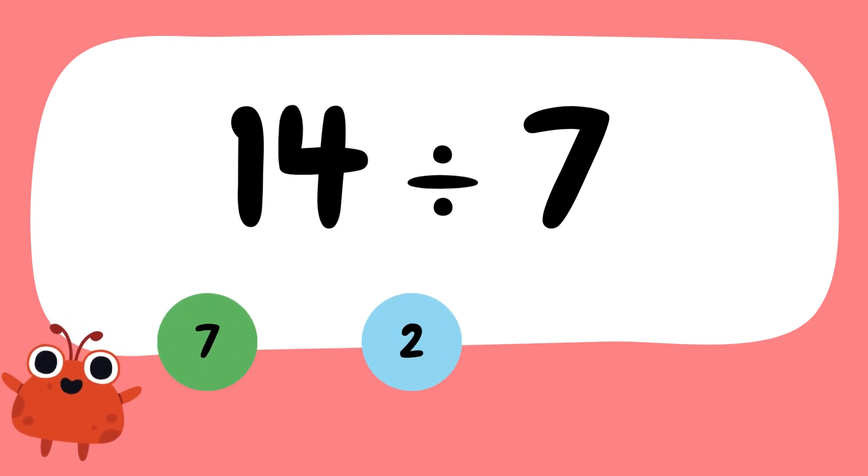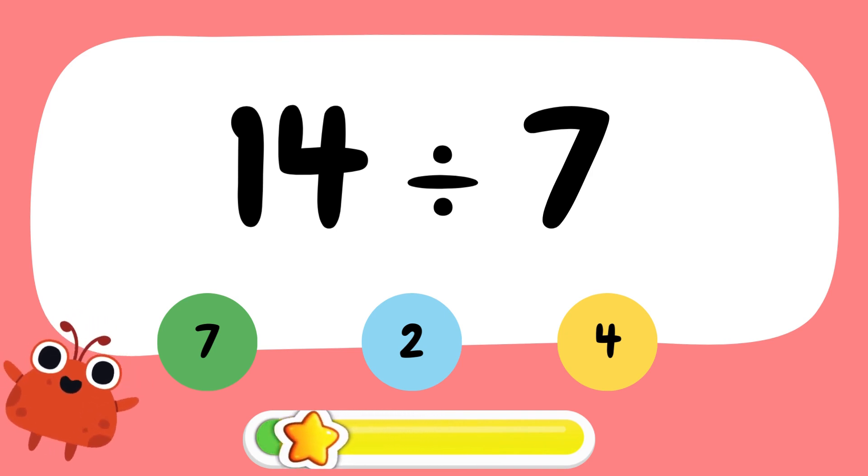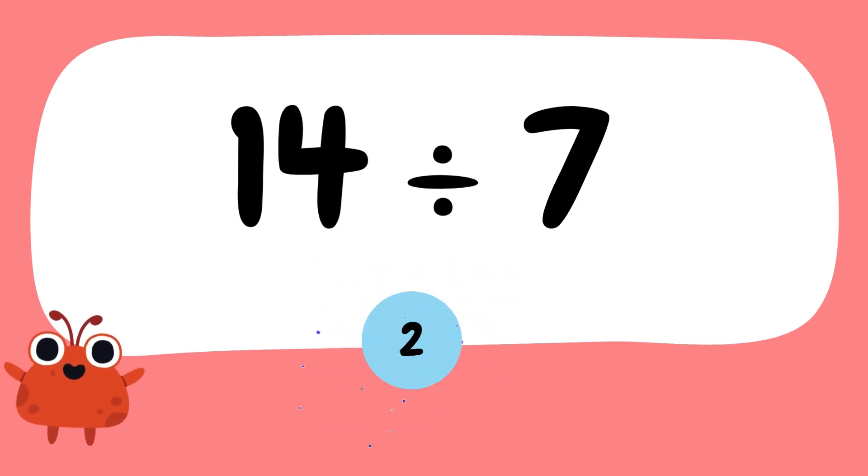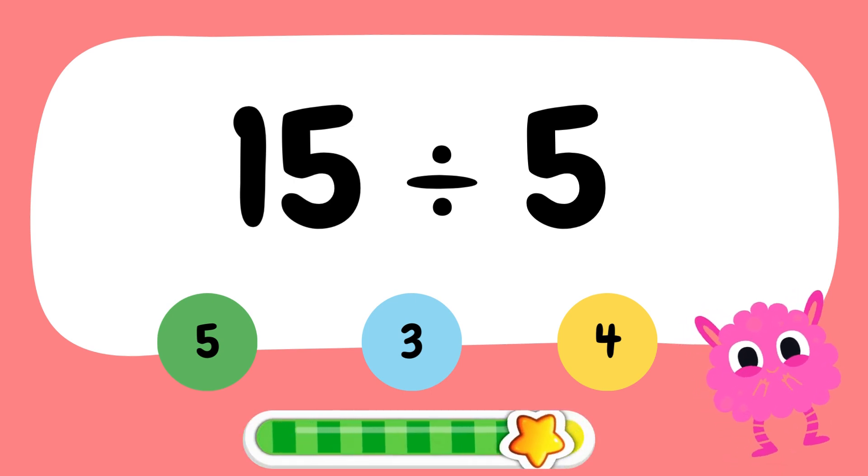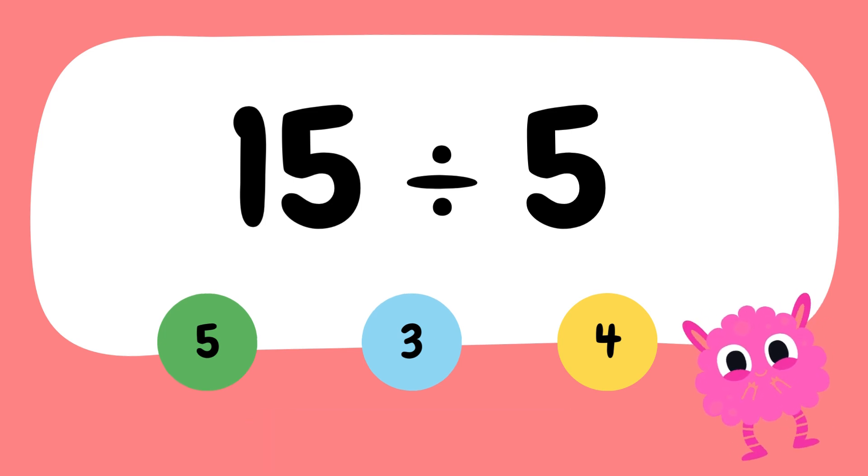What is 14 divided by 7? It's 2. What is 15 divided by 5? It's 3.